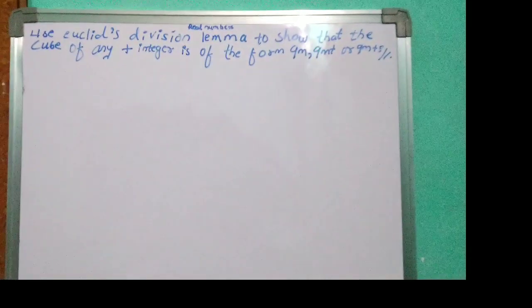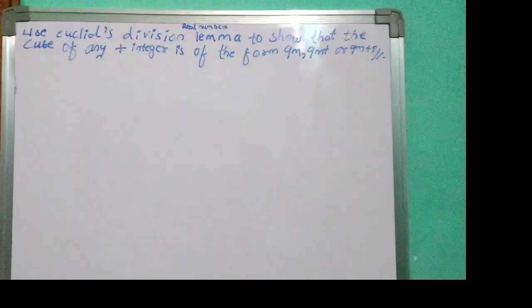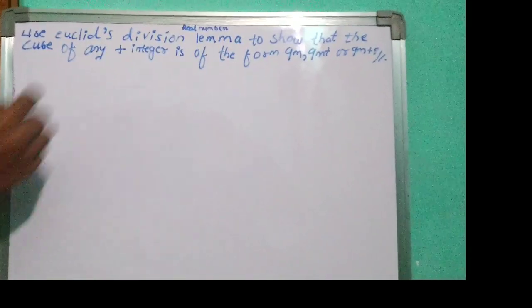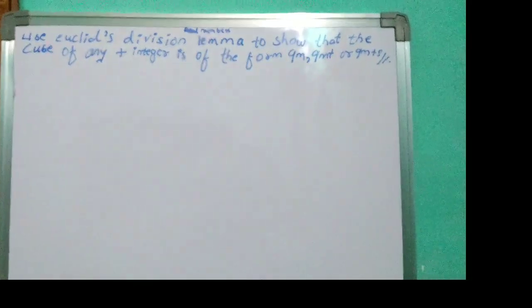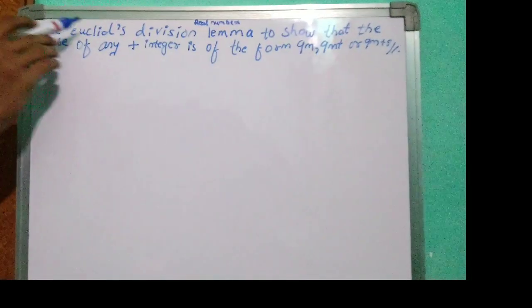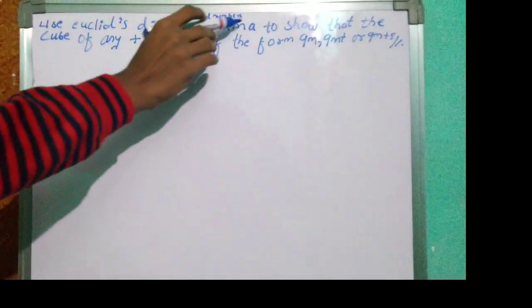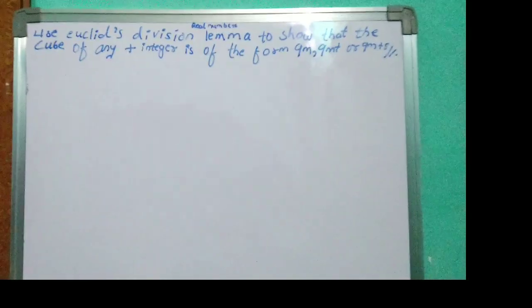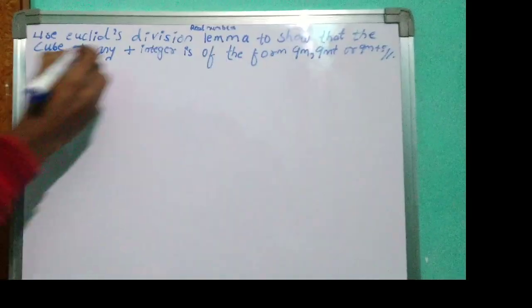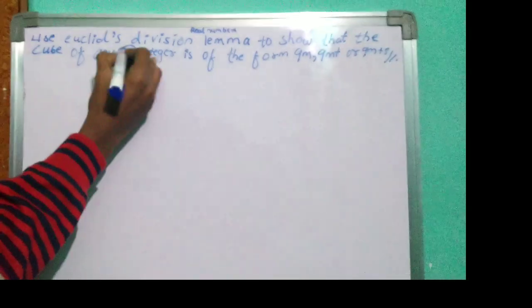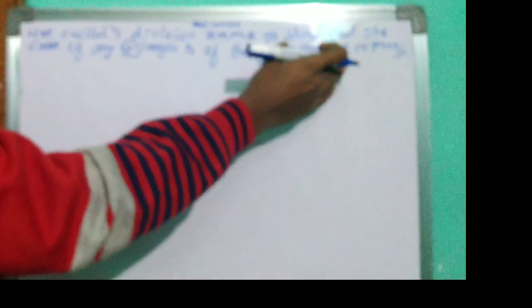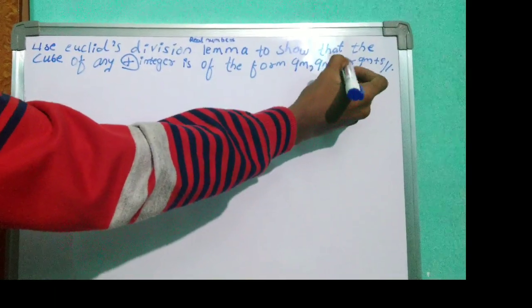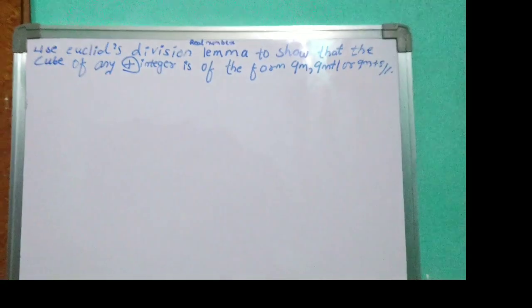Today we have to discuss real numbers, exercise 1.1, fifth question, which is: use Euclid's division lemma to show that the cube of any positive integer is of the form 9m, 9m plus 1, or 9m plus 8.